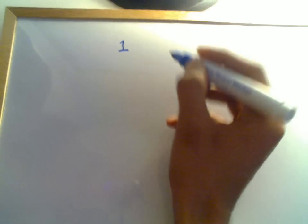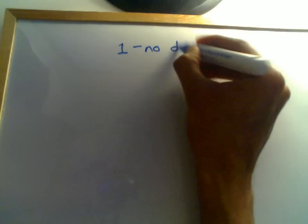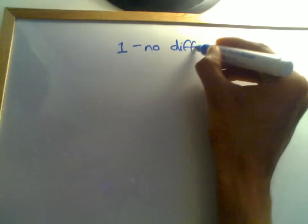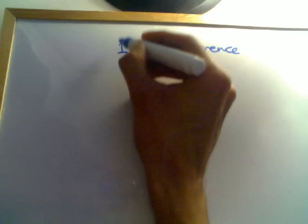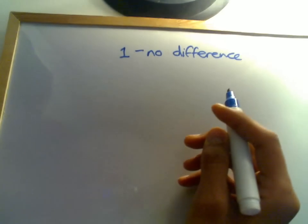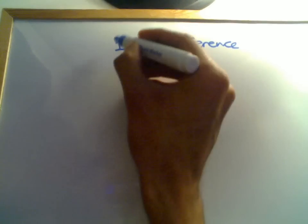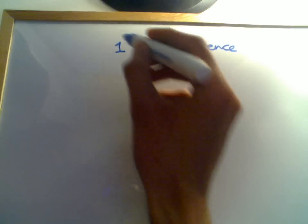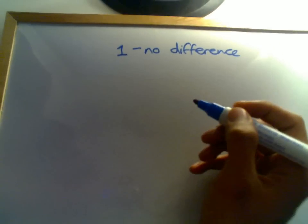If we do our sums and we get a relative risk of one, that would imply that there's no difference. So our exposure, the exposure we're measuring has no difference on disease outcome. So it's not a risk factor, it's not a cause. In the terms of an intervention trial, it would mean that our intervention is not making a difference.